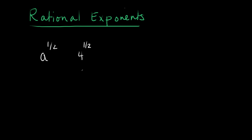So what on earth does something raised to the one-half power even mean? Let's go back to using a because I want to talk about numbers in general. I'll tell you what it means and I'll tell you why it means that, because it might be a little weird. It turns out that if you have one-half as an exponent, what it is telling you to do is take the square root of the base. So a is the number being raised to the exponent — we call it the base — and something raised to the one-half power really means take the square root of it.